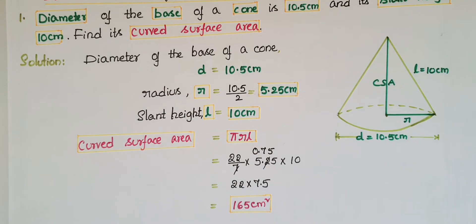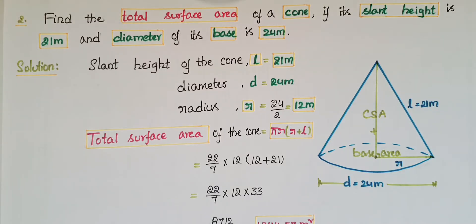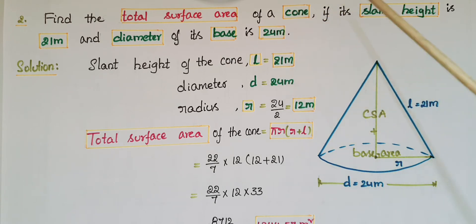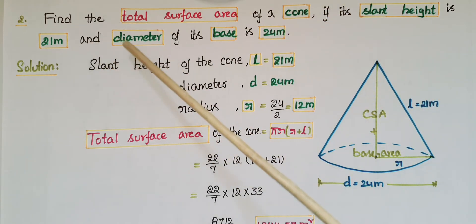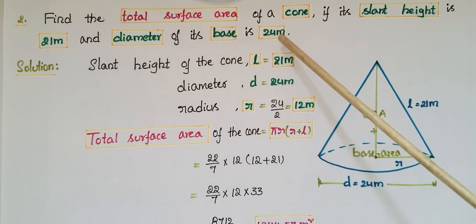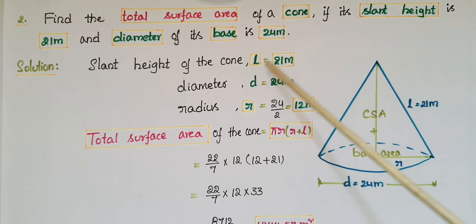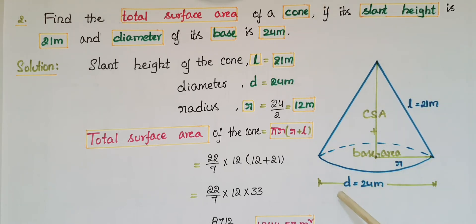This is the second problem: find the total surface area of a cone if its slant height is 21 meters and the diameter of its base is 24 meters. Here, slant height l is equal to 21 meters, and the diameter of the base d is equal to 24 meters.